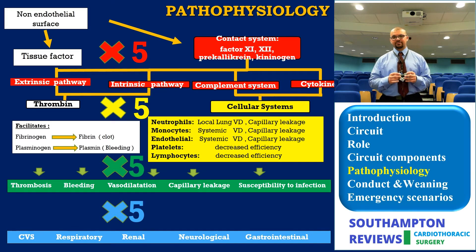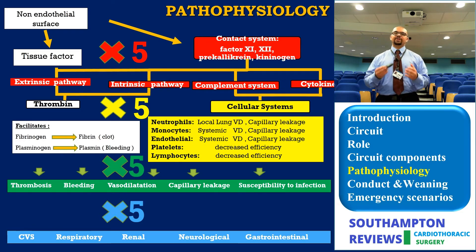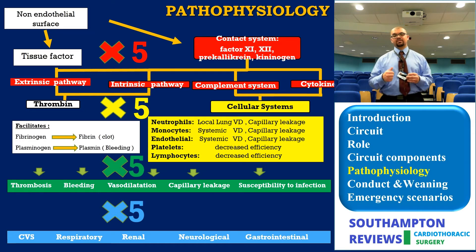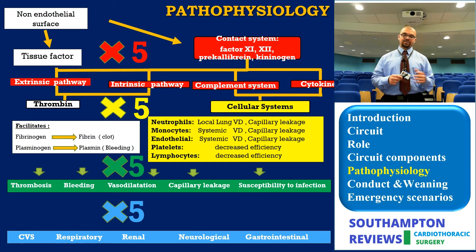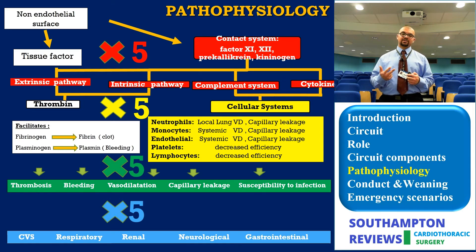In red I put the five plasma proteins, which are the contact system, the extrinsic and intrinsic pathway factors, the complement system, and cytokines. These will activate five cellular systems: the neutrophils, monocytes, endothelial cells, platelets, and lymphocytes — as well as the coagulation cascade produced down in the hierarchy.